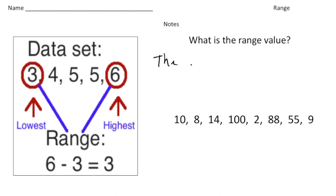All right, so here's one example. Here we have the numbers 3, 4, 5, 5, and 6. What you have to do is first identify the biggest number and then also the lowest number. So here I circle the 6 and the 3.